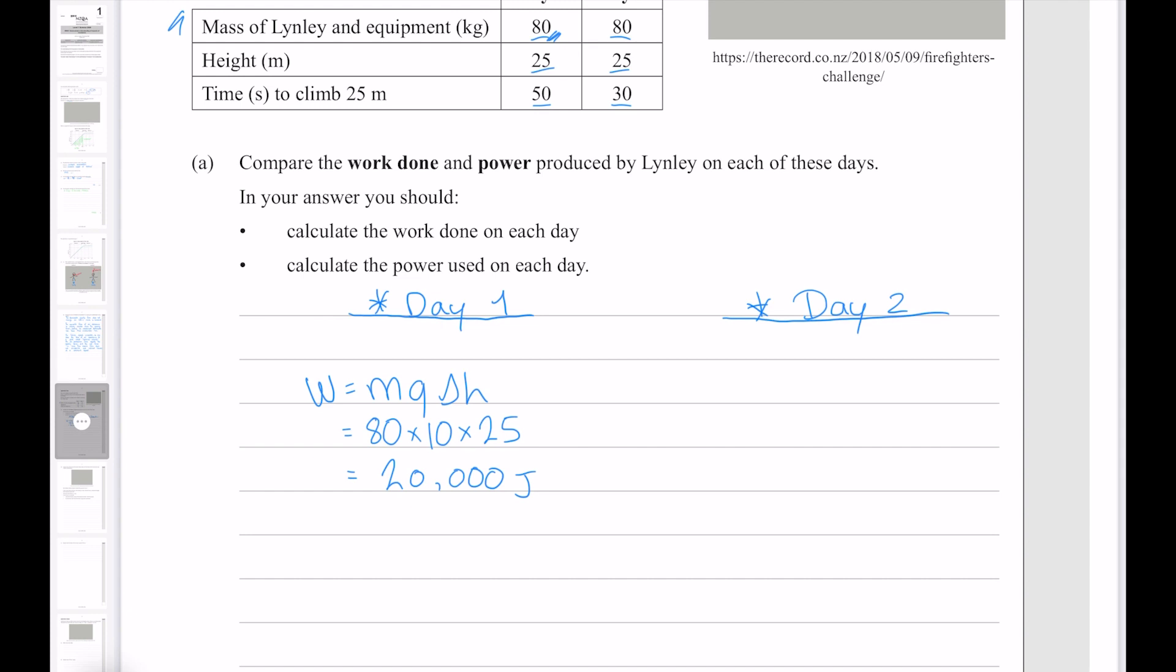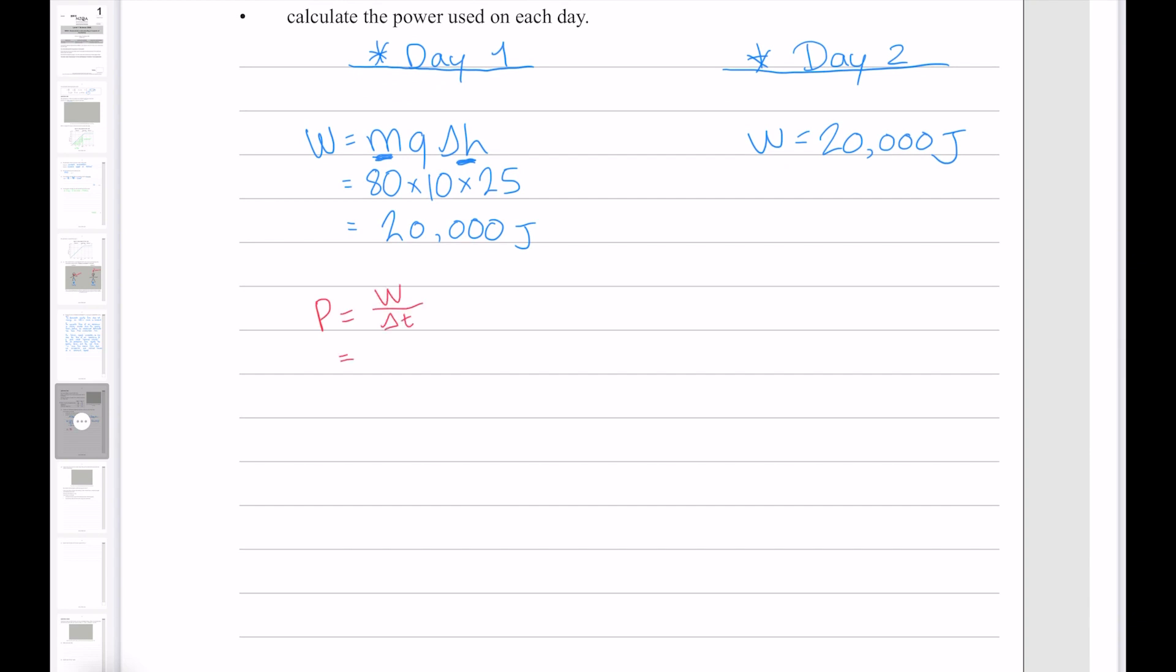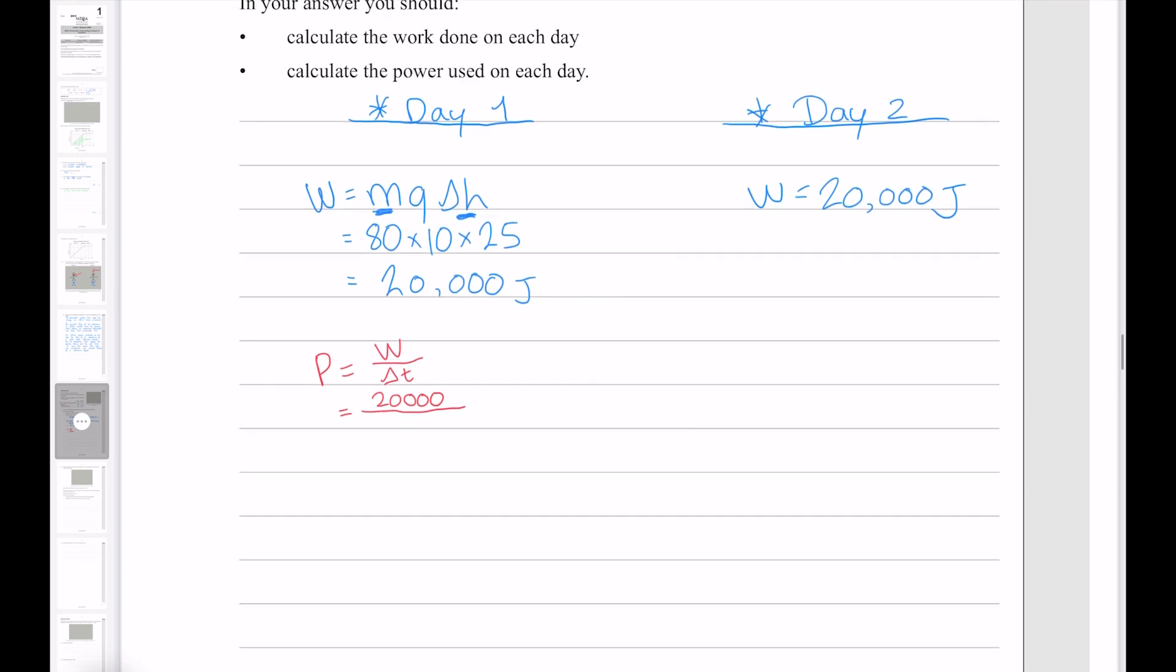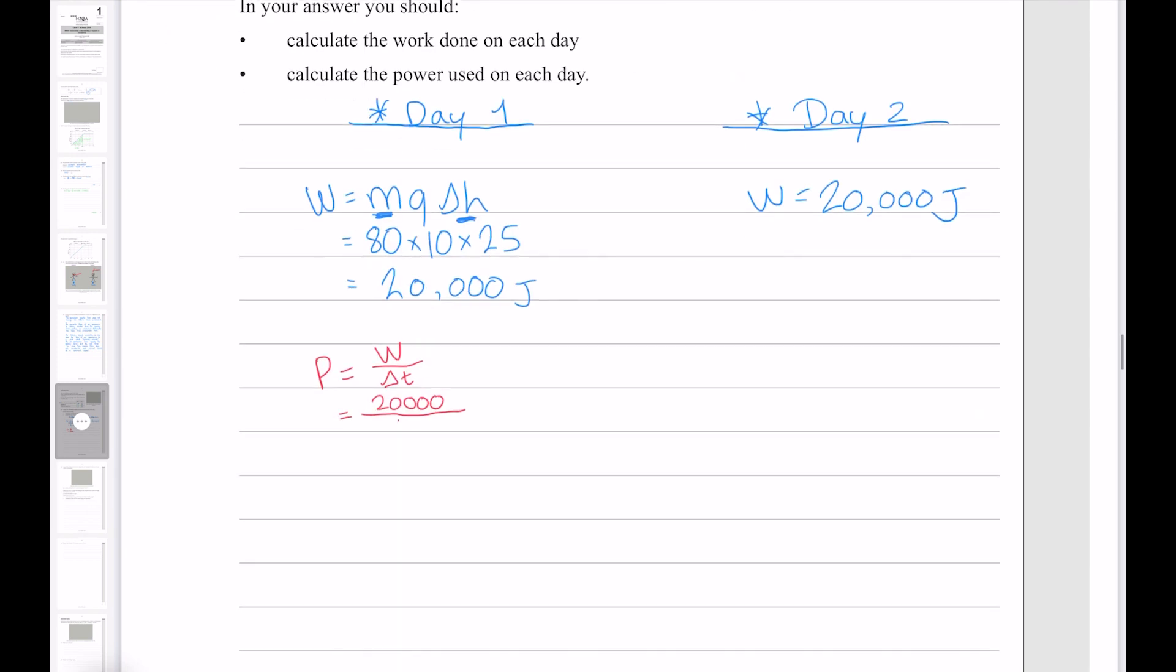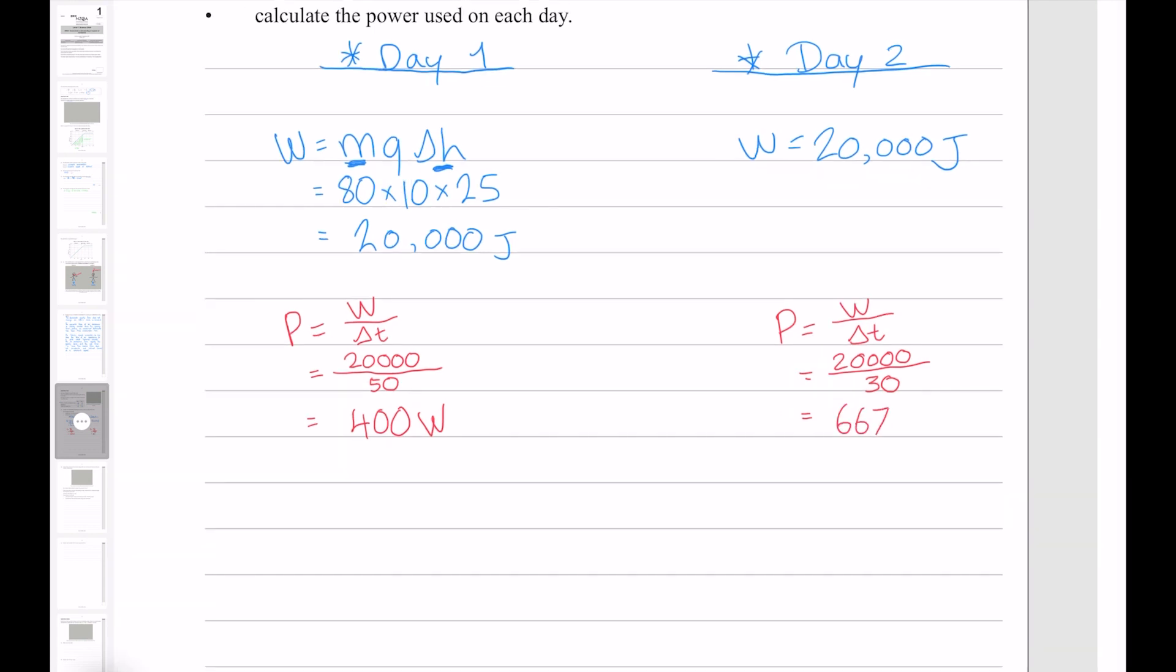Now since between the two days, the mass is the same, and also the height is the same, the only thing you might recall that changes is our time, the work done on day two is also going to be 20,000 joules. Our equation for power is work over time. Where our work is 20,000, and our time on the first day is 50 seconds. Where on the second day, it's 30. And that gives us 400. The units of power are watts. And here we get 6.6666, which will round up to 667.